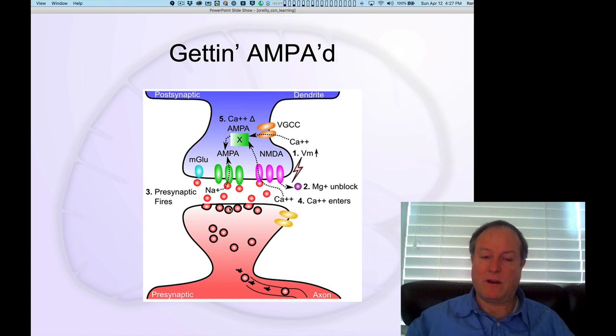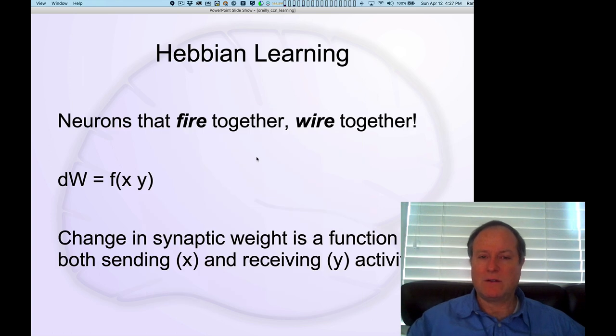So a really important property of this form of plasticity that has been identified in terms of these underlying biological mechanisms is that it depends critically on the pre-synaptic and post-synaptic neurons. In other words, the sending neuron and the receiving neuron both have to be active in order for those calcium ions to enter the post-synaptic cell. And this turns out to correspond to a theoretical idea advanced by Donald Hebb in 1949 that says that neurons that fire together wire together. So basically that the change in the synaptic weight, the change in the connection between neurons, is a function of both of those neurons being active.